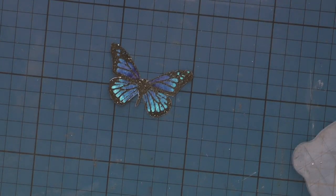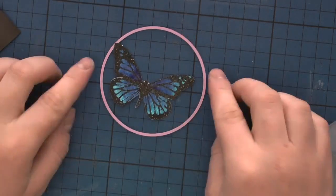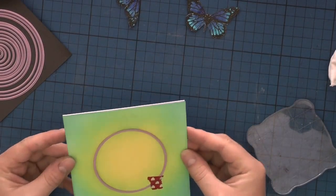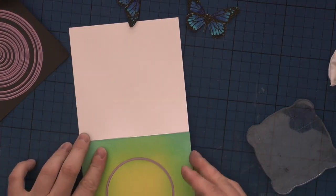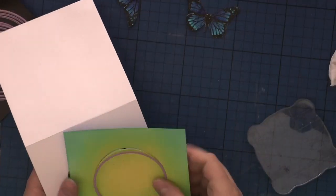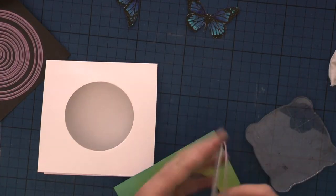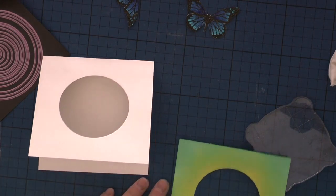Now I'm going to use a circle die that fits my butterfly perfectly, and I'm going to die cut through the card front as well as card base using my Sizzix die cutting machine. The front panel fits perfectly on top of my card base.